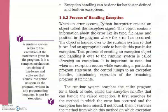What is the process? When I click run, the program is running, an error occurs, the exception handles it, corrects it, and continues — but how exactly? First, a note: a runtime system refers to the execution of the statements given in the program. It is a complex mechanism consisting of hardware and software that comes into action as soon as a program written in any programming language is put for execution. Simply put, when we give instructions and the software and hardware start executing — that is our runtime system.